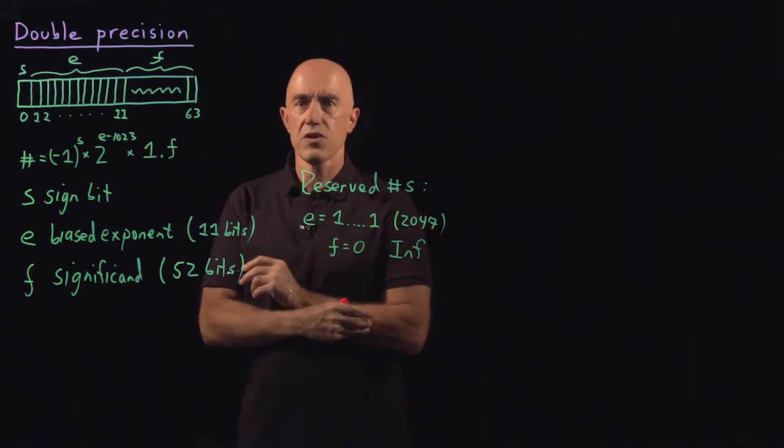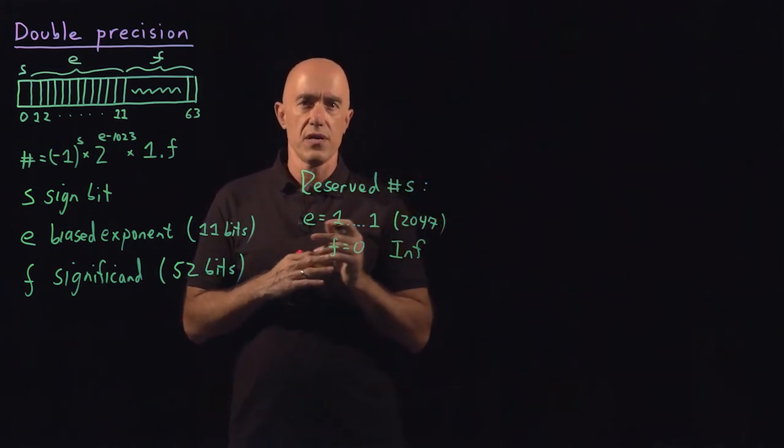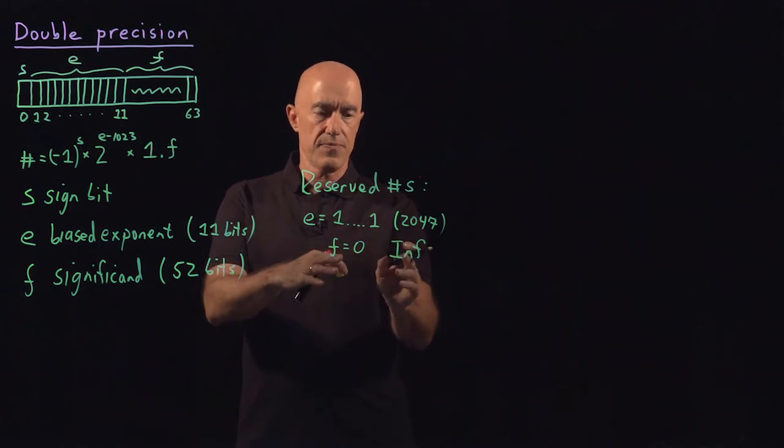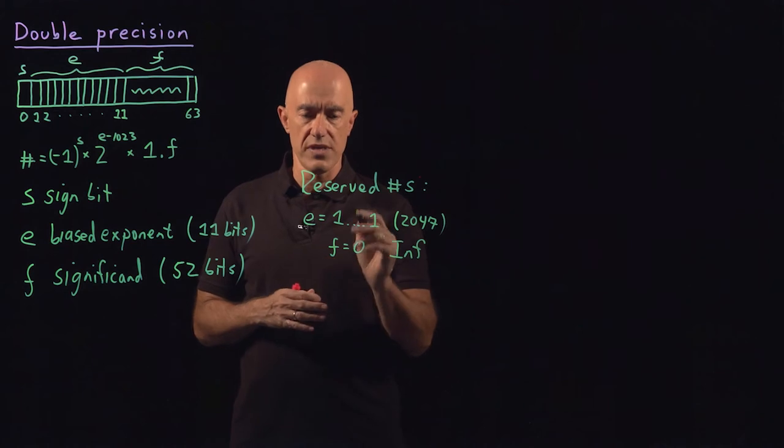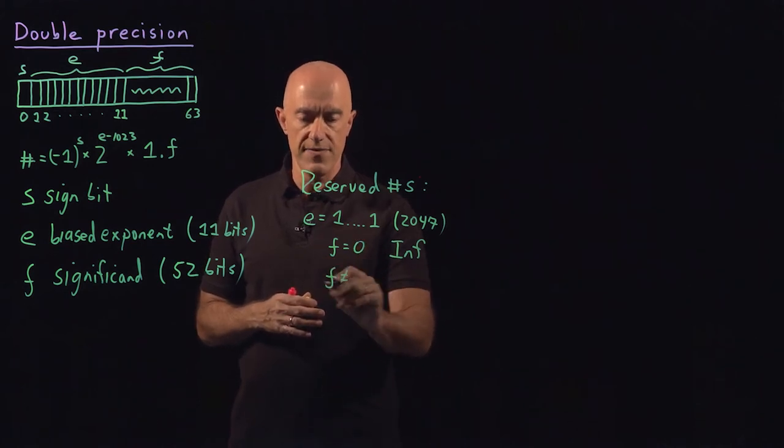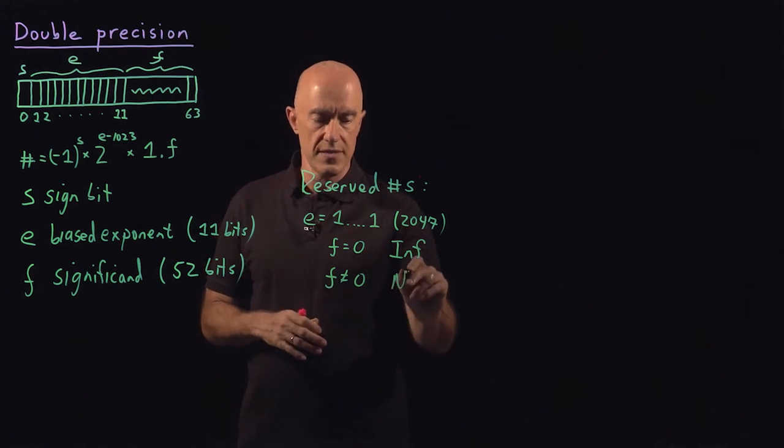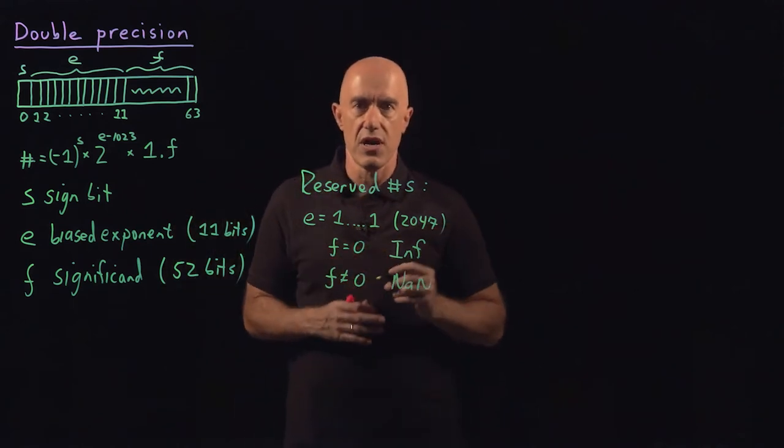But on the other hand, we need to reserve another number when F is not all zero bits. That number is not a number. So these two numbers are different.